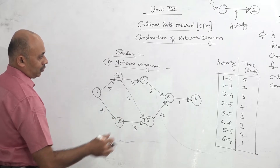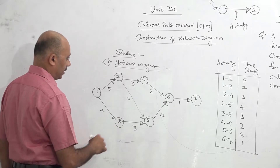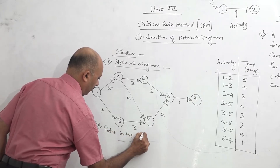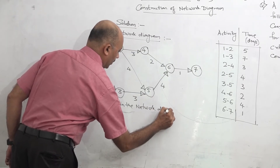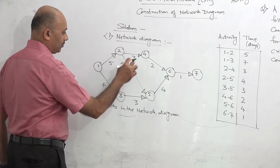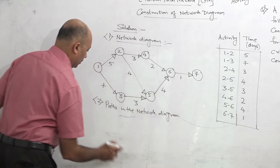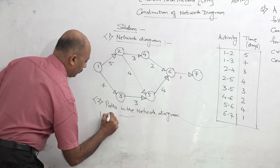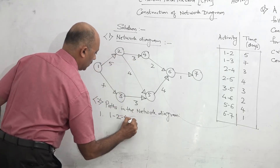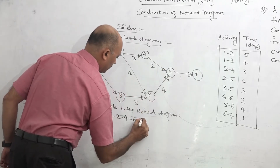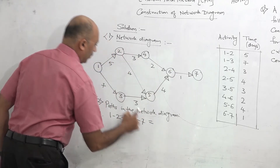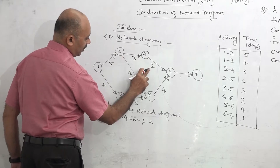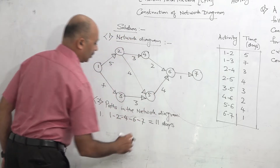Now we go to identification of the critical path. Before going to the critical path, we should understand what a path is. A path is the number of ways you can go from the start of the project to the end of the project. The first path connects 1-2-4-6-7. Adding the time along the path: 5 plus 3 is 8, plus 2 is 10, plus 1 is 11. So the total time of path number 1 is 11 days.